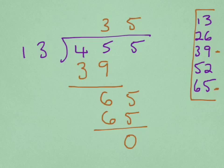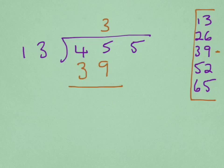So 13s into 455 go 35 times. And I'm going to show you that again, and you're going to watch it unfurl again.